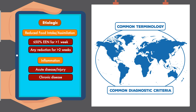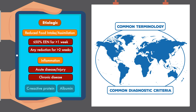Inflammation is broken down into acute disease or injury and chronic disease — the same as for the Academy-ASPEN tool — with acute disease representing severe inflammation and chronic disease representing mild to moderate inflammation. For GLIM, the use of inflammation as a criteria can be supported by laboratory markers like C-reactive protein or albumin, but it's not listed as a requirement.